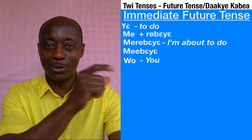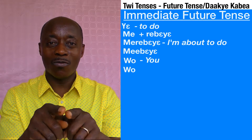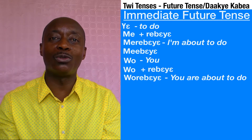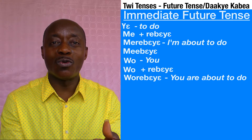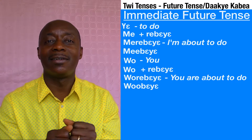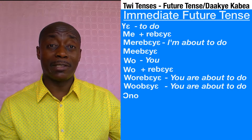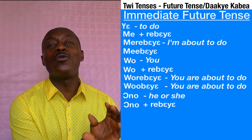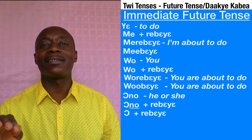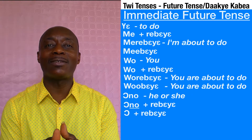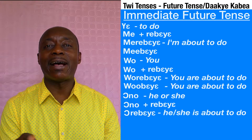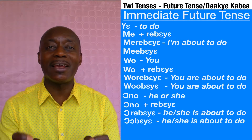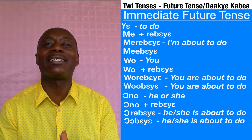For singular 'you': 'wo' plus 'rebeye' gives 'wo rebeye' — meaning 'you are about to do.' In normal daily conversations, we say 'wobeye.' For 'ono' (he or she): we write 'ono' plus 'rebeye.' 'Ono' loses the 'no,' so we get 'o' plus 'rebeye' — giving us 'o rebeye,' meaning 'he is about to do' or 'she is about to do.' In normal daily conversations, we say 'o rebeye.'